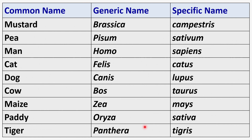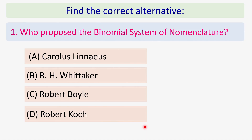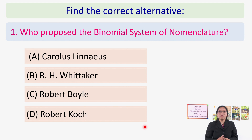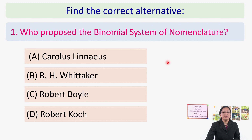We have learned many things about taxonomy and binomial system of nomenclature. Let us check through some questions. First question: who proposed the binomial system of nomenclature? The correct answer is Carolus Linnaeus.